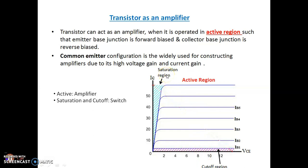In the saturation region, a transistor — whatever the configuration, common emitter, common base, or common collector — will behave as an ON switch. In the cutoff region it will behave as an OFF switch. And between these two regions, saturation and cutoff, there is one region known as the active region, and in that region it will behave as an amplifier.